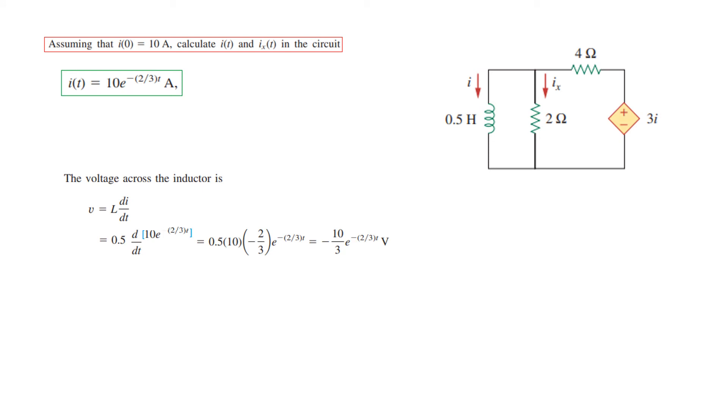We will use this I that we calculated. Taking the differential we get this answer. This is now V. So V divided by 2 will give us Iₓ. So Iₓ = 1.667e^(-2t/3). This is the answer and one of the methods. I think this is the easiest method.